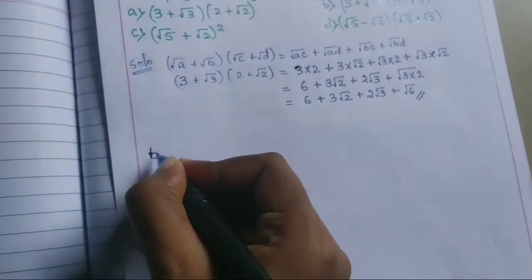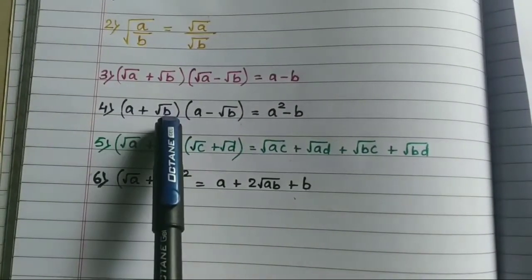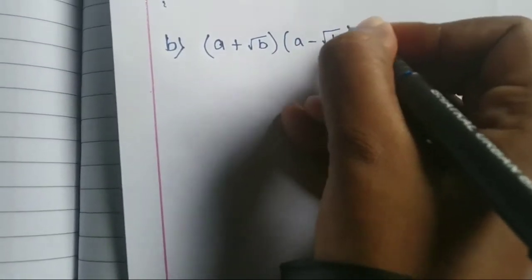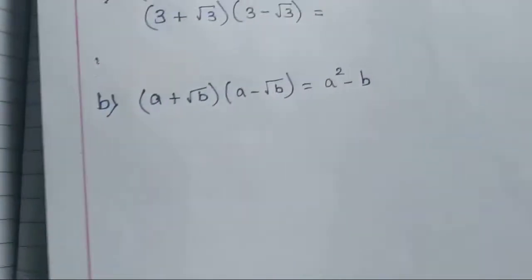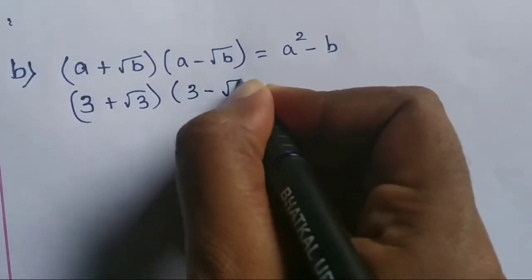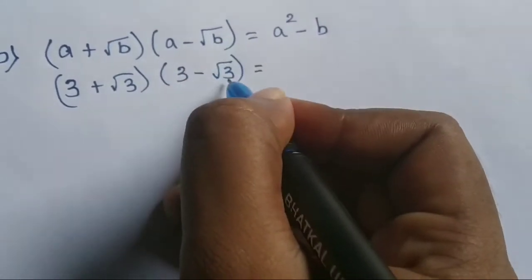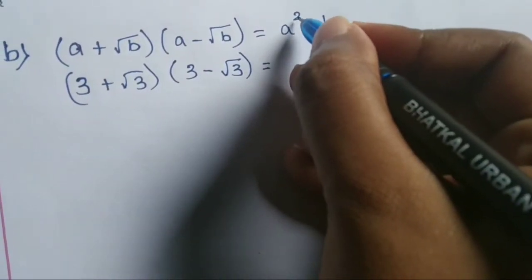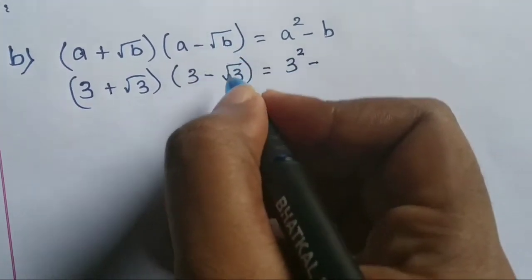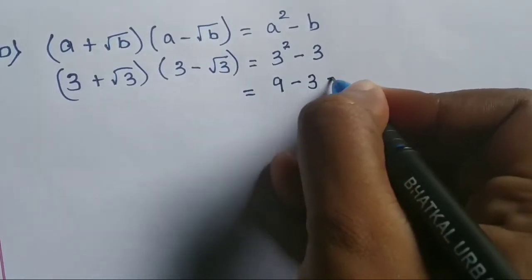Moving to the second problem: (3 + √3)(3 − √3). We apply identity four: A plus root B, times A minus root B, equals A squared minus B. Here A is 3 and root B is √3, so B is 3. The answer is 3 squared minus 3, which is 9 minus 3, giving us 6.